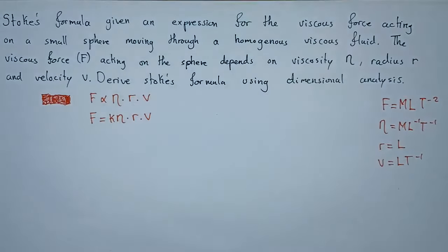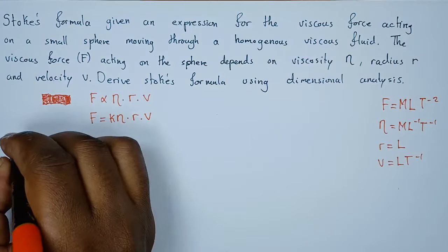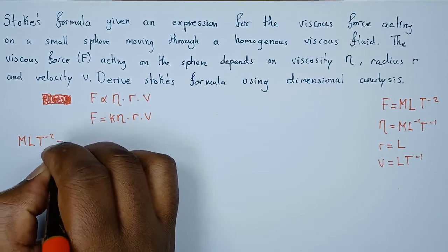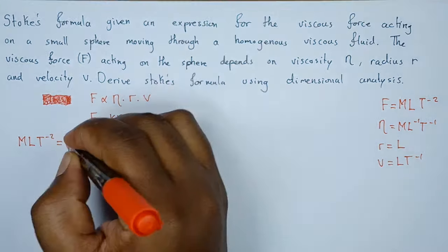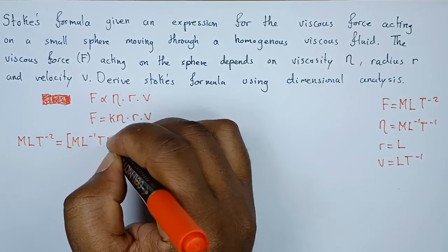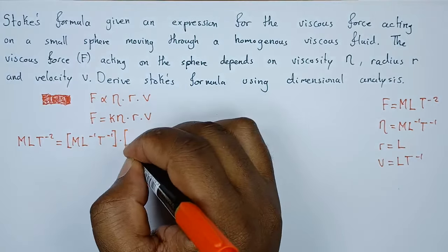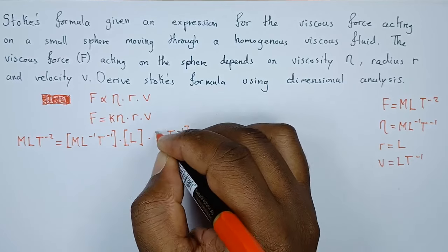Now let's replace these quantities with their respective dimensions. I'm not going to include K because it just represents a constant. The dimensions for force: M L T⁻². This equals dimensions for η the viscosity, which is M L⁻¹ T⁻¹. Dimensions for radius is just L. Dimensions for velocity is L T⁻¹.